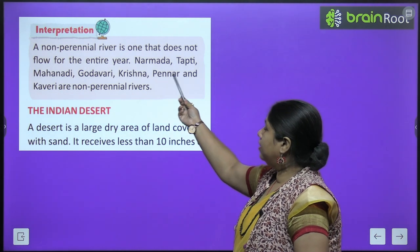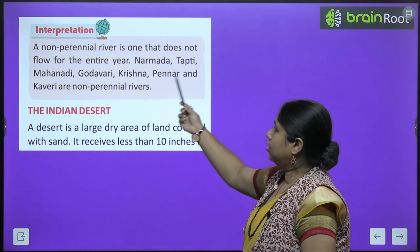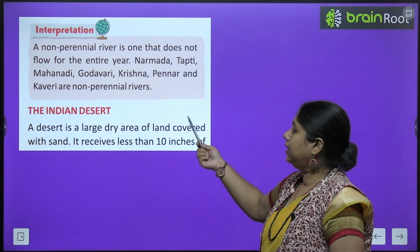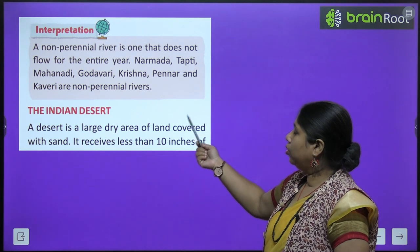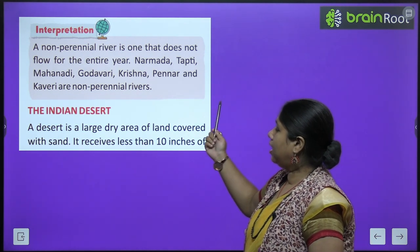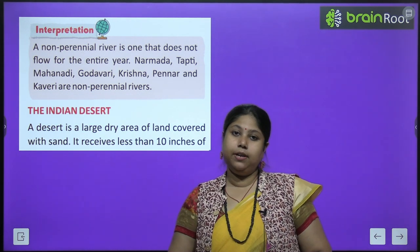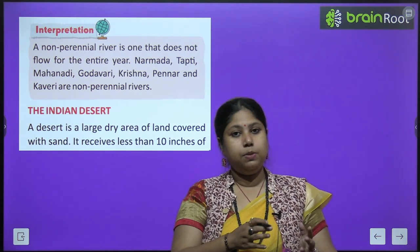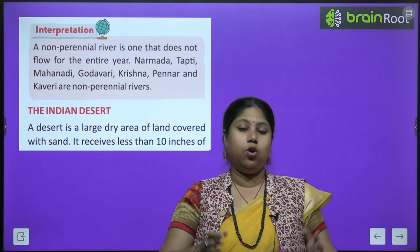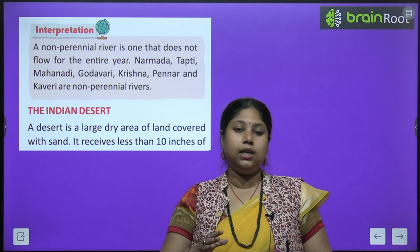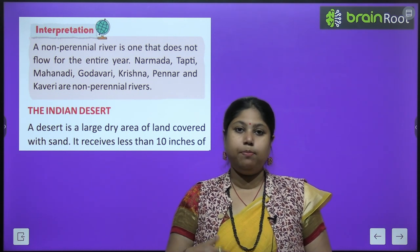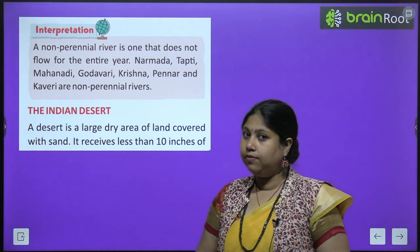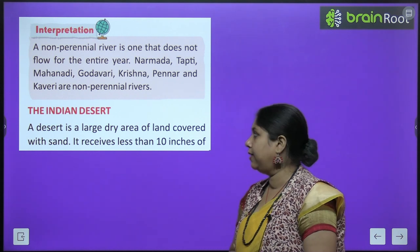The non-perennial rivers are rivers that do not flow the entire year. These include Narmada, Tapi, Mahanadi, Godavari, Krishna, Pennar and Kaveri. Perennial rivers wo hote hain jisme paani saal bhar flow karta hai, aur non-perennial rivers jo saal ke kuch mahine flow karte hai aur baad mein sukh jaate hai — yaani non-perennial rivers seasonal rivers hote hain.